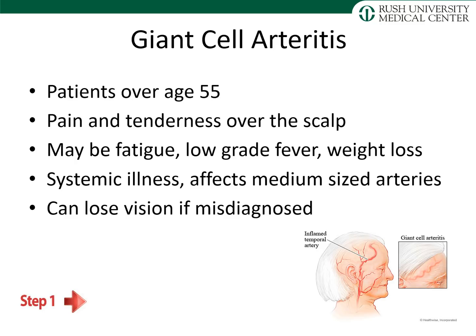Giant cell arteritis is a secondary headache disorder occurring in patients over age 55. Patients present with pain and tenderness over the scalp and may also have fatigue, low-grade fever, or weight loss. It is a systemic illness affecting medium-sized arteries with arterial inflammation. Because it involves the temporal artery and affects blood supply distribution, vision can be lost if misdiagnosed. Diagnosis requires a biopsy of the temporal artery to look for inflammation, and treatment with steroids is needed to save long-term vision.